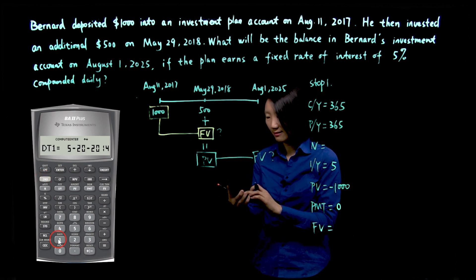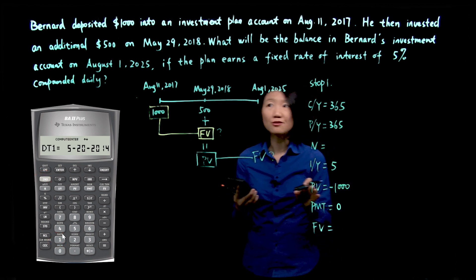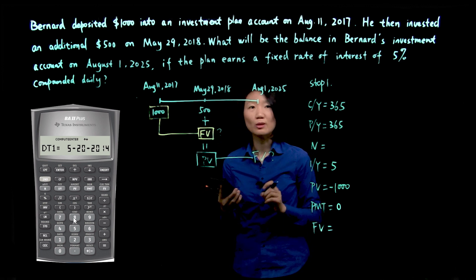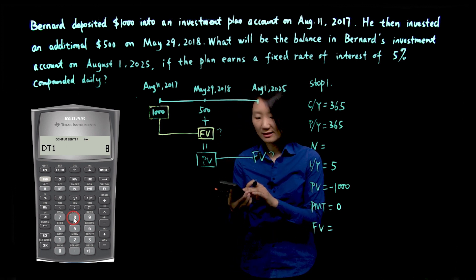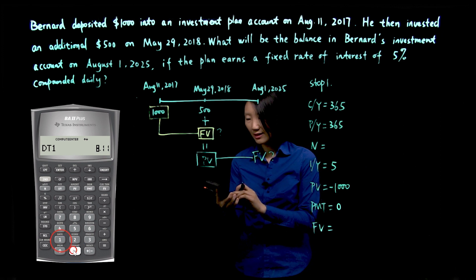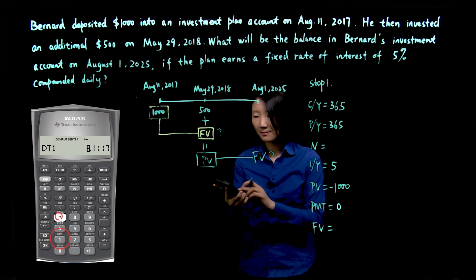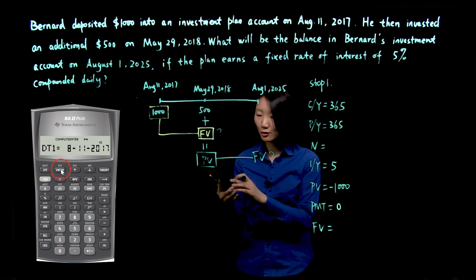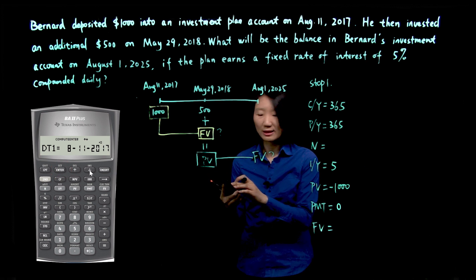So we use second date function. The first date is August 11, 2017. We'll have to enter it as 8.11.17. And push enter, you'll see August 11, 2017.